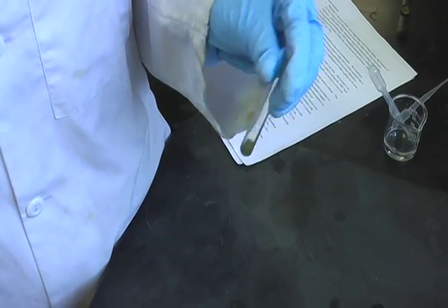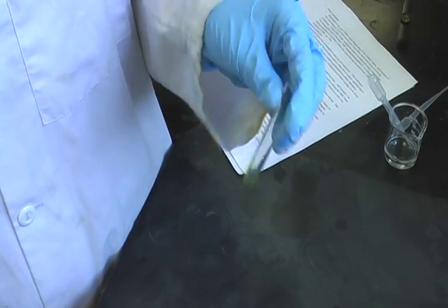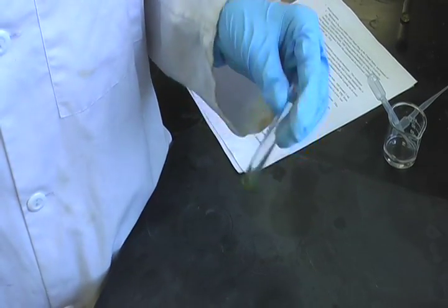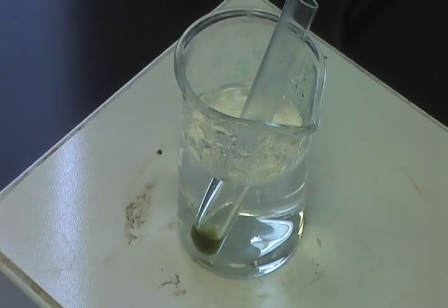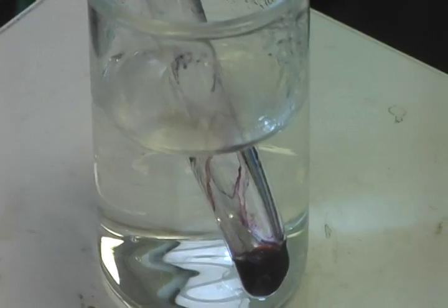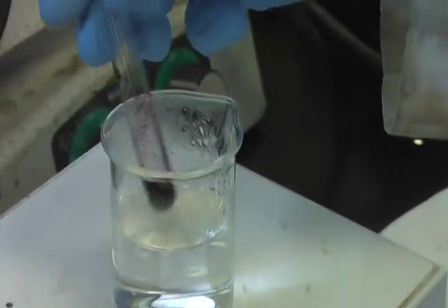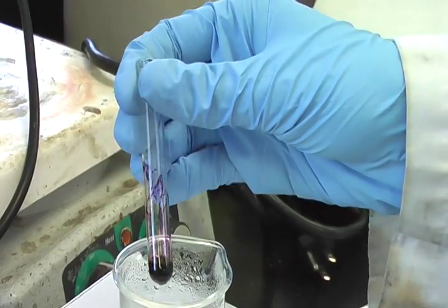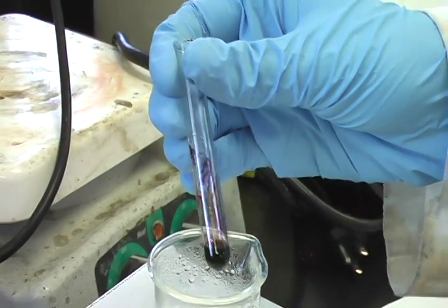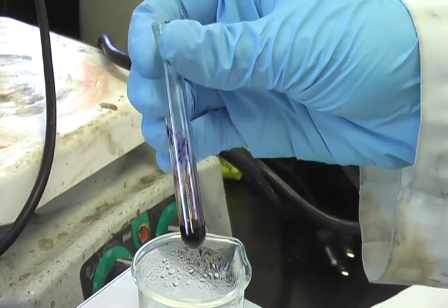Now, the test tube is shaken for 30 seconds and placed in a hot water bath for two to four minutes. After heating for around two minutes, a purple color is observed, which is due to the completion of the condensation reaction, which forms a chromophore.